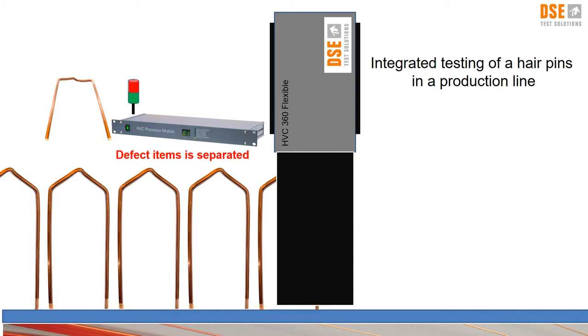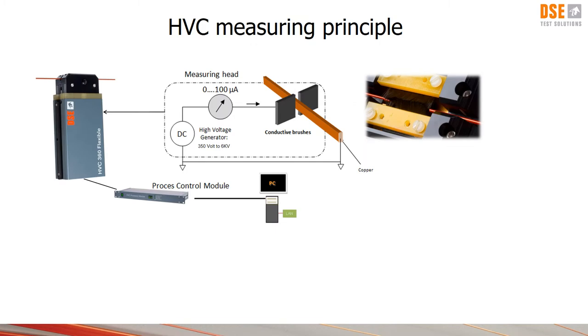Let's take a look at the measuring principle behind it. A part of the measuring head is a high voltage generator which is operating from 350 to 6 KV. The inner conductor is connected to ground and now we measure continuous current flowing from the brushes towards ground. Due to the insulation the current can only flow in cases of defects in the insulation.